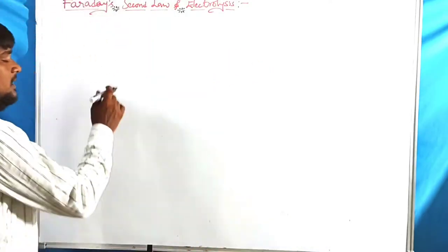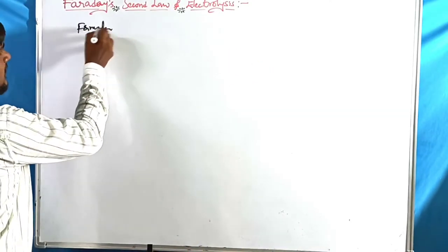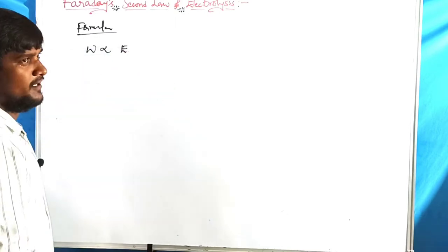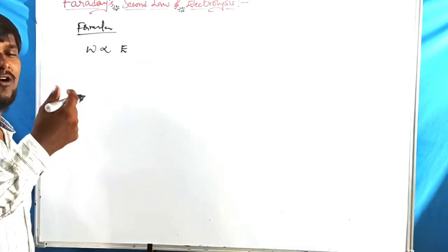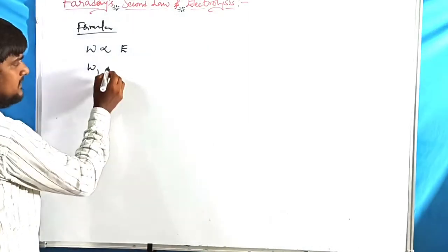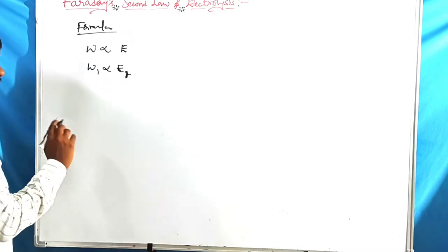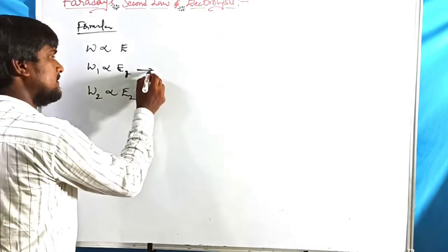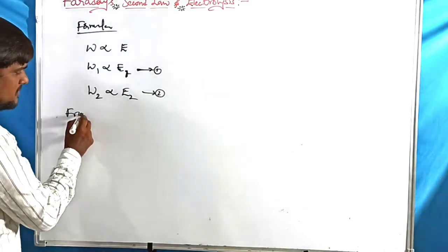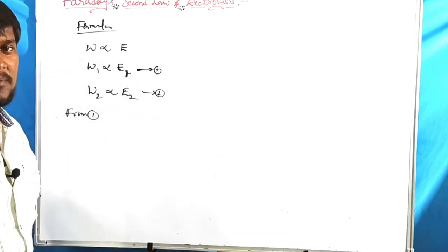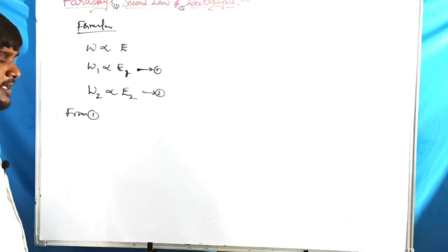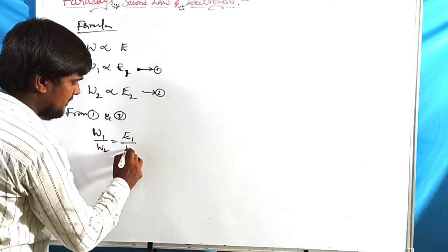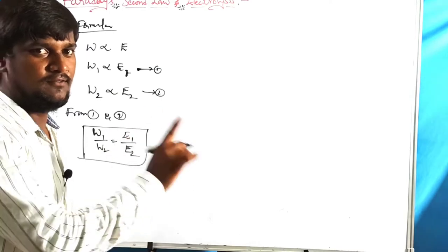For the formula method of Faraday's Second Law: the weight of substance deposited or liberated is directly proportional to the equivalent weight. For two different electrolytes, W₁ ∝ E₁ and W₂ ∝ E₂. From these two equations, W₁ / W₂ = E₁ / E₂. This is the mathematical expression of Faraday's Second Law.